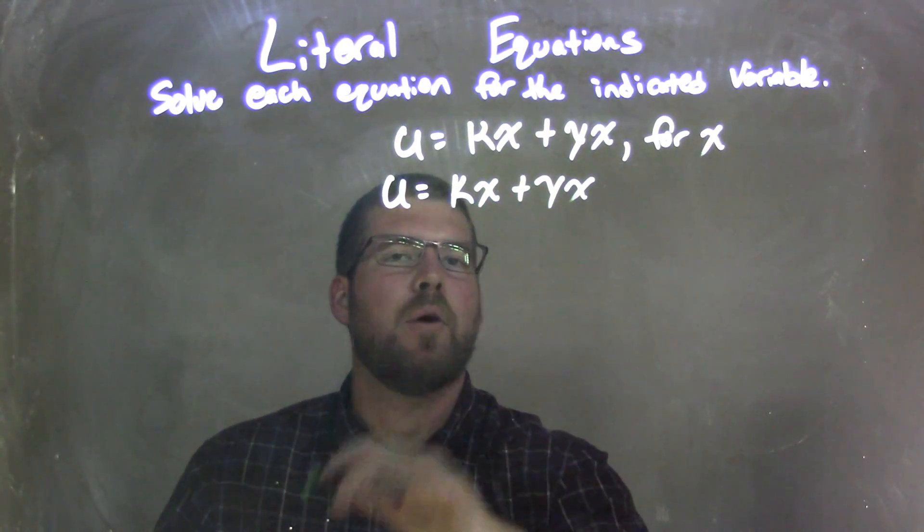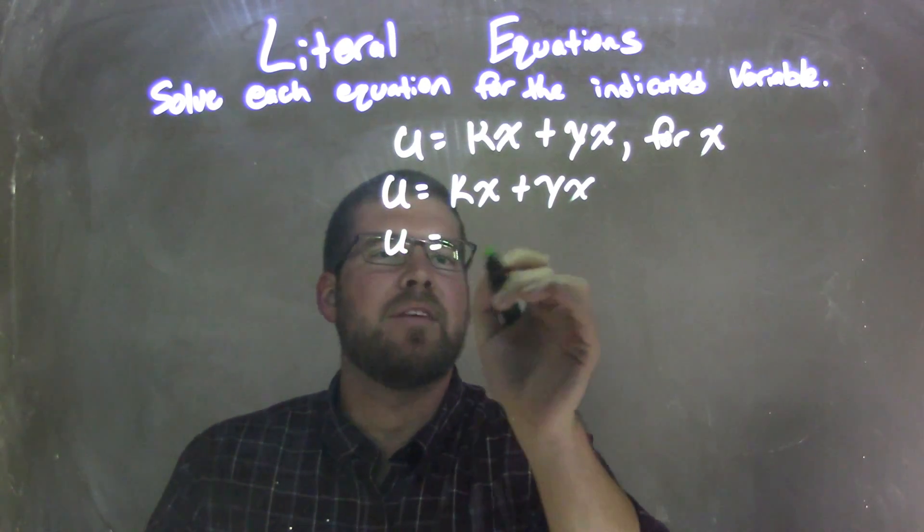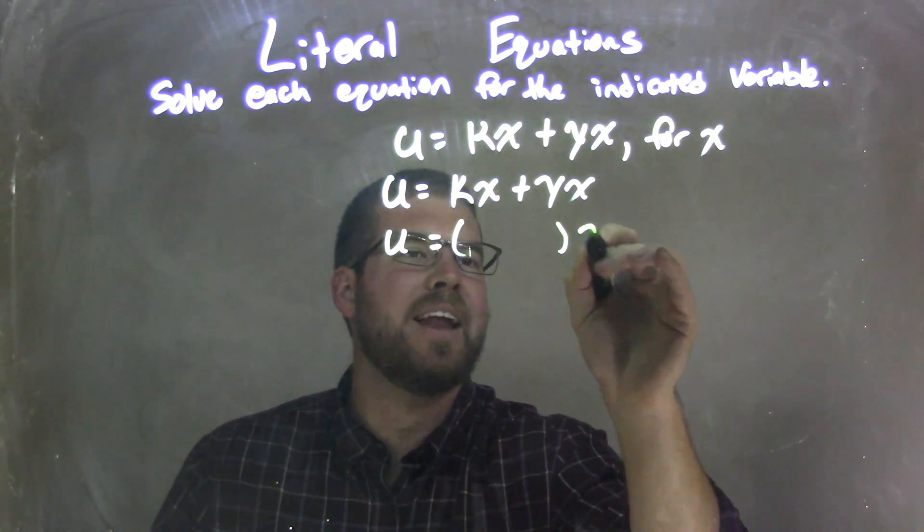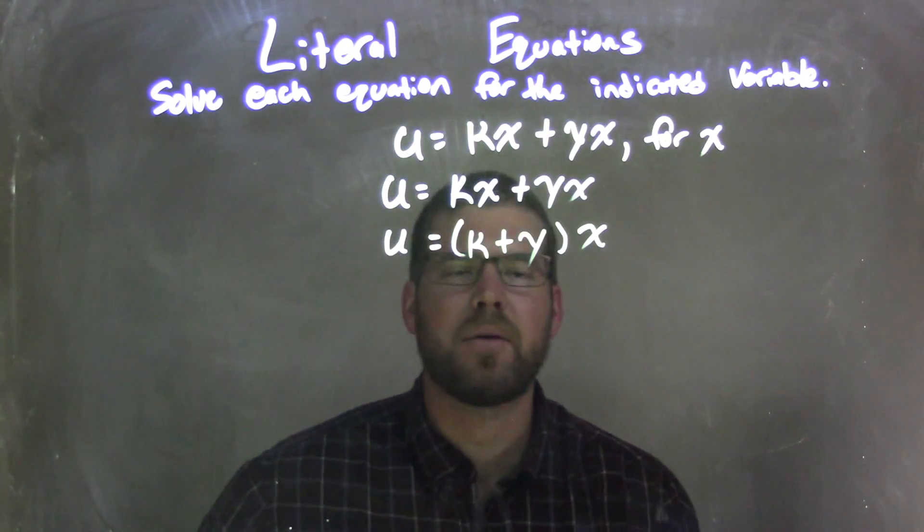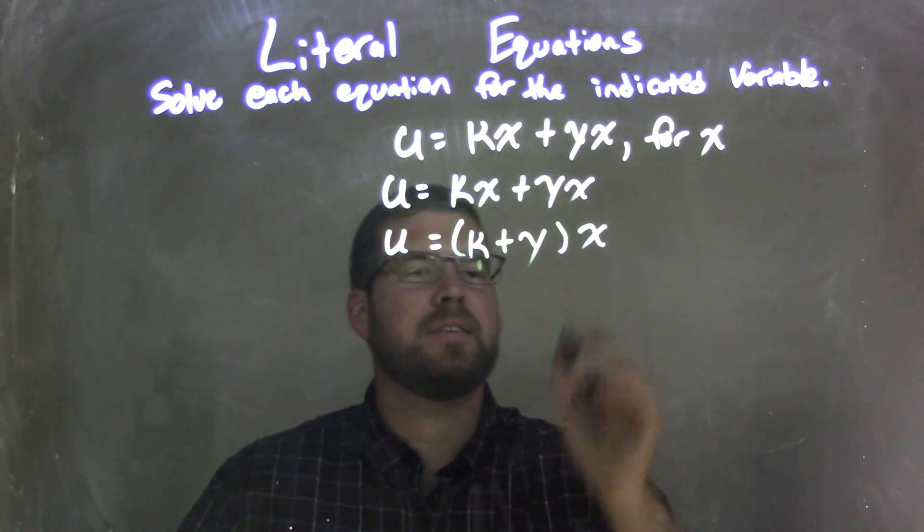I noticed that there's an x in both parts here. So my next step is I'm going to pull out an x from both parts, leaving me with k plus y. So I have k plus y in parentheses times x.